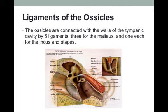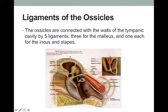There are about five ligaments that hold the three ossicles. Three ligaments attach the malleus to the walls of the middle ear space, and there is one each for the incus and the stapes. These ligaments are responsible for holding the ossicular chain dangling within this air-filled middle ear space with a minimum amount of inertia.